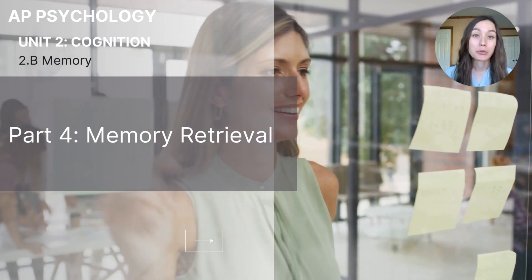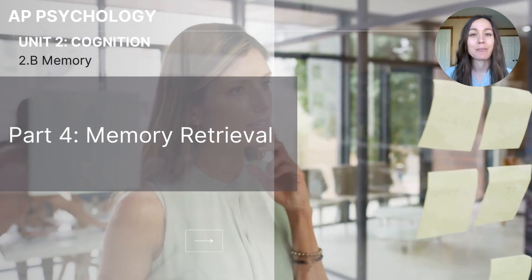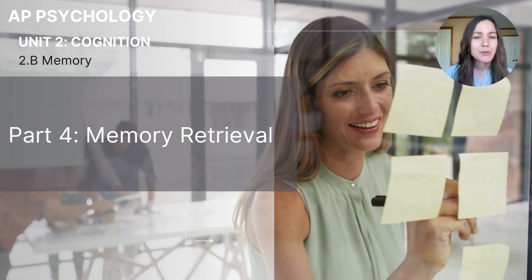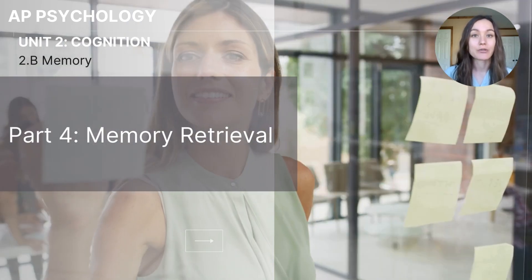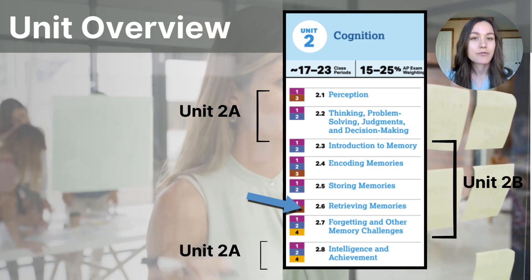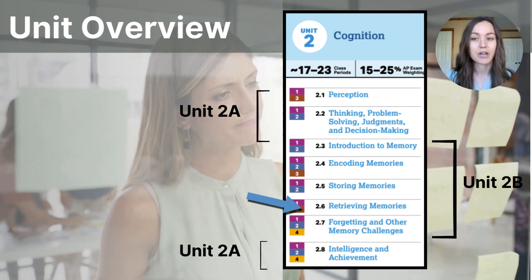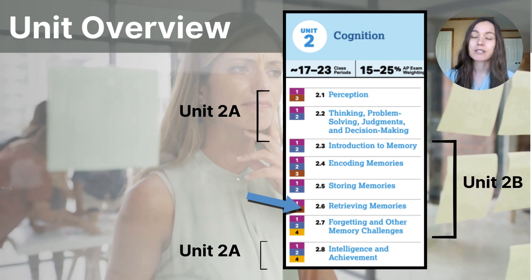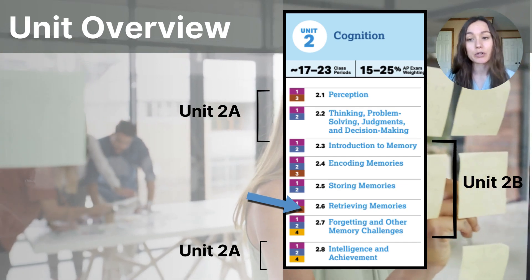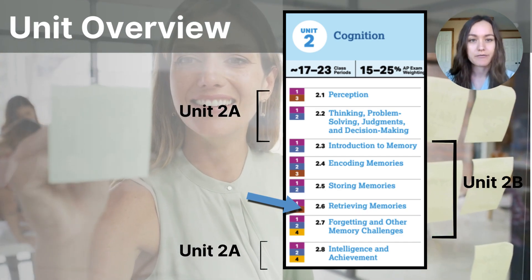Hi everyone. This video is part four of the 2B series on memory in the cognition unit for AP psychology students. This particular video will focus on retrieval. As you can see on our unit outline, this is the fourth video in our set of five on memory. This video is going to focus on how memory is picked up after it's been stored in the mind and the different factors that influence memory retrieval.